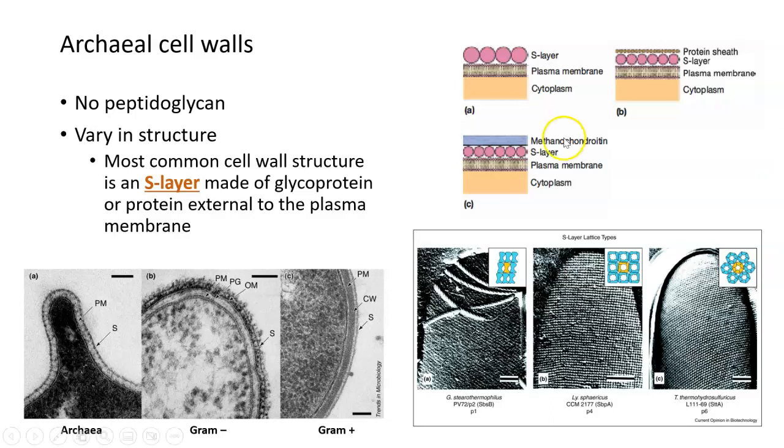That said, archaea cell walls can vary in their structure, and you can see three different possible compositions of cell wall structure over here on the right. The most common cell wall structure for an archaea is what's known as an S-layer, which sits on the outside of the plasma membrane of an archaeal cell and is made mostly of a mixture of glycoproteins and regular proteins.